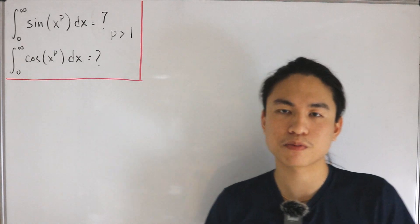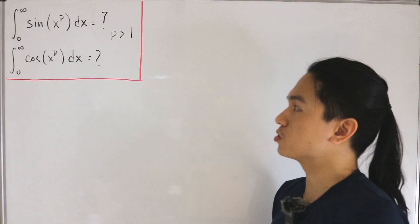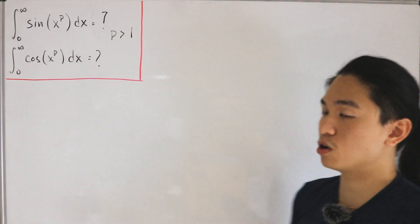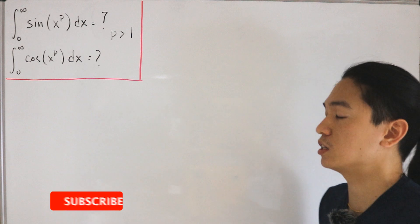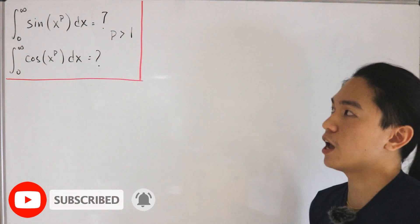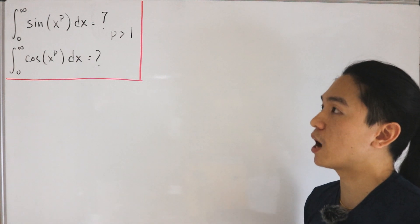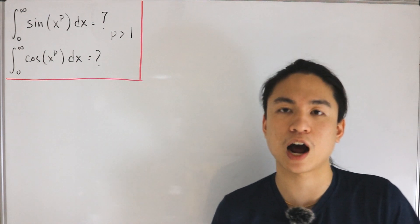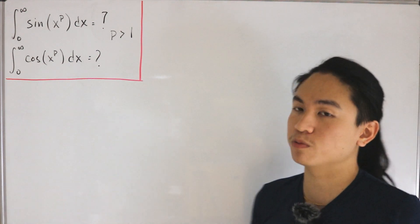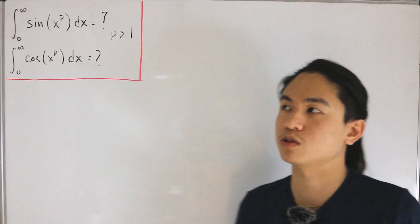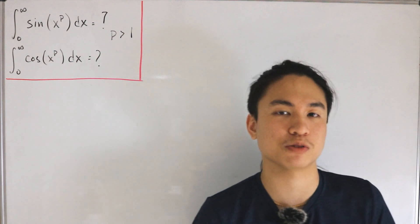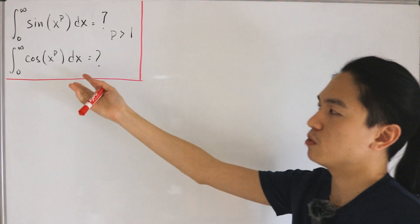We have two integrals we would like to calculate and find in a nice closed form. These are known as Fresnel integrals — transcendental functions discovered by mathematician Augustin-Jean Fresnel. They are highly used in studies of optics and physics, and are closely related to the error function and the Euler spiral, which is the parametric curve using the Fresnel cosine and sine functions.